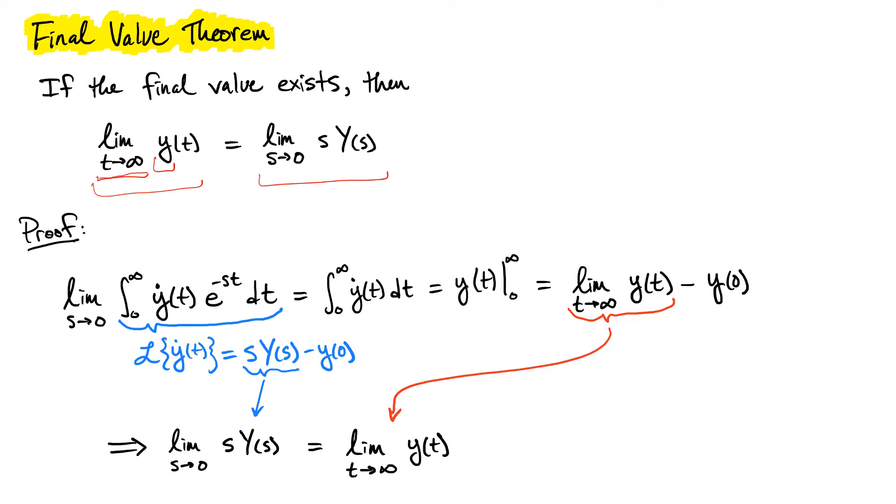We do that by taking the limit as s goes to zero of this product, s times the Laplace transform of y. The proof is not particularly revealing to understand what this is going to do for us—it's going to do quite a lot—but I think it's still useful to see how the proof comes about so that you can understand where these results come from.